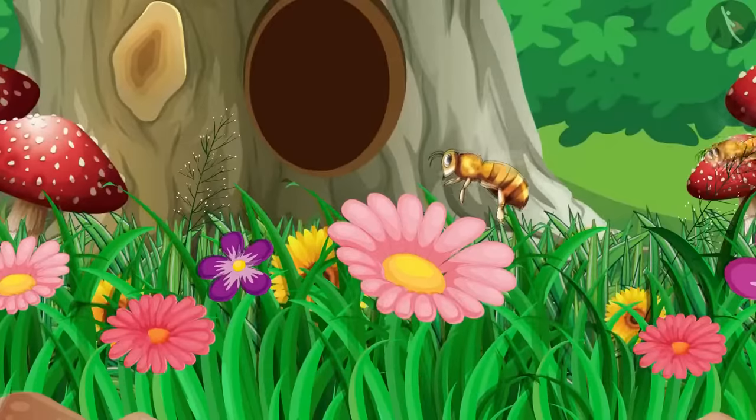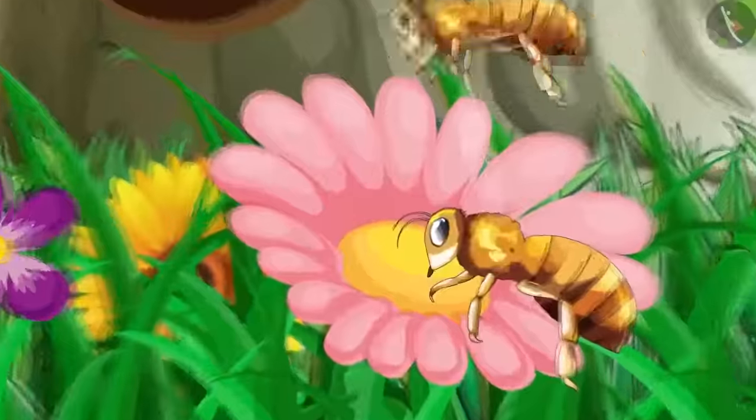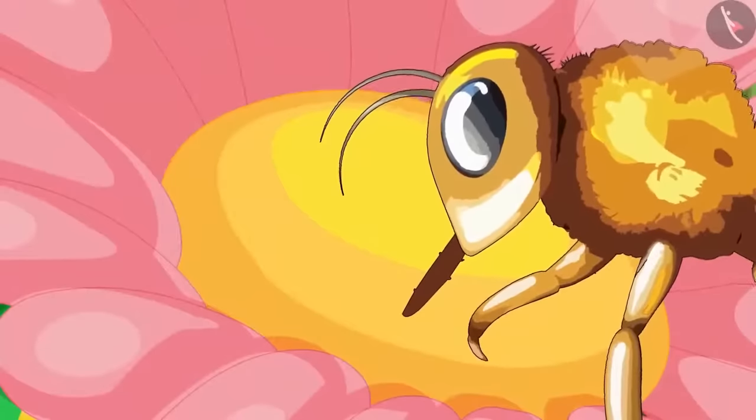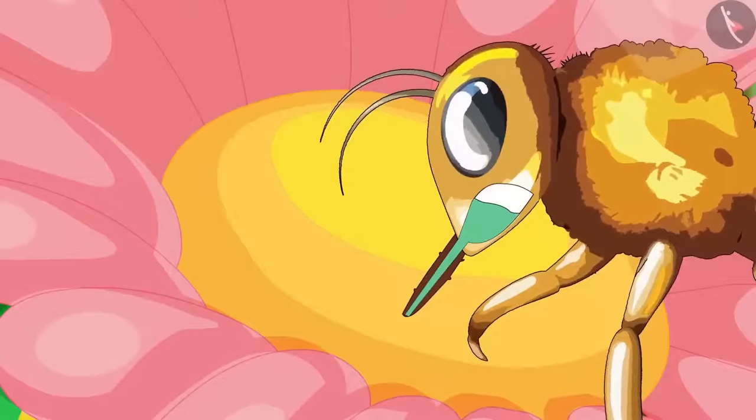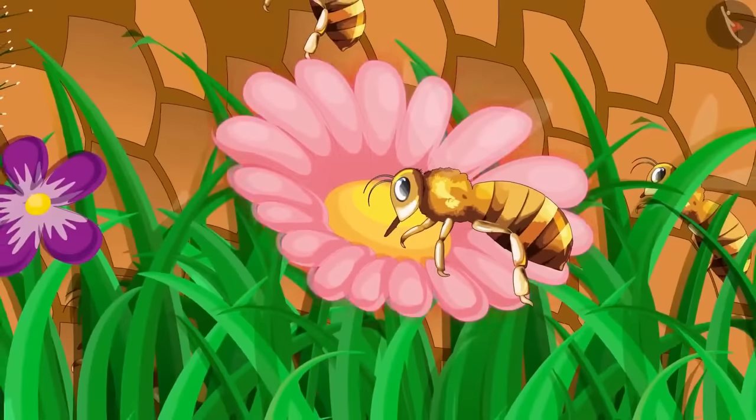Bees sit on various flowers and absorb the nectar present in the flower. Now, this nectar combines with the enzyme present in the mouth of bees, which makes honey and the quality of honey depends on the flowers available to the bees.